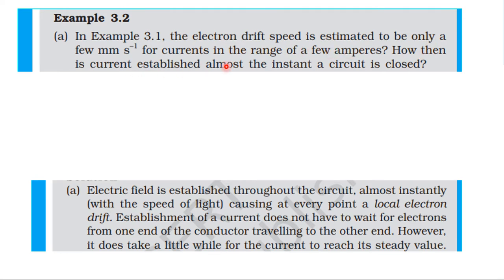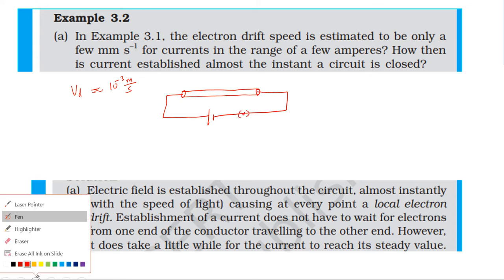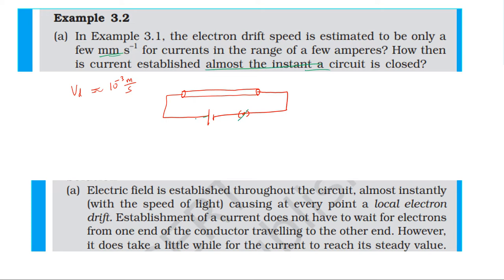How then is current established almost the instant a circuit is closed? Eventually from example 3.1, the speed of the electron is in the order of 10 power minus 3 meters per second. When the circuit is closed, the current flows instantly. Electric field is established throughout the circuit almost instantly with the speed of light, causing at every point electric field to be created at the speed of light.